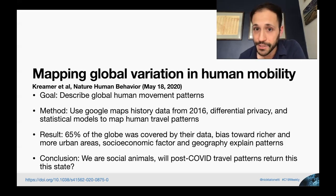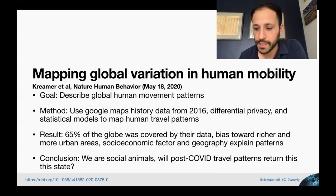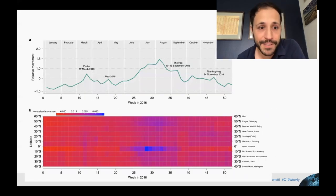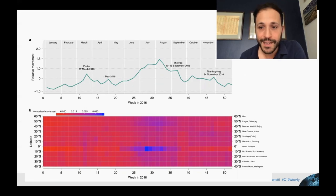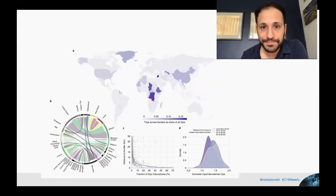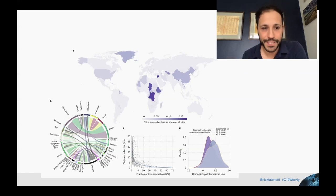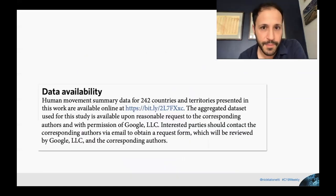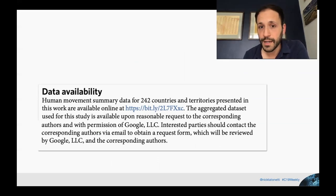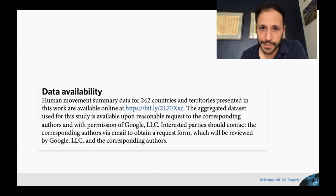They found that socioeconomic factors and geography explain patterns in human movement. The conclusion is that we were quite social — at least in 2016 — and I wonder what these data will show after this year in our post-pandemic future. They show that travel peaks around major global holidays, break it down by latitude, and show international travel as a function of all travel per country. They make their data available in summary form, and the more comprehensive differential privacy dataset is available upon request, reviewed by Google.